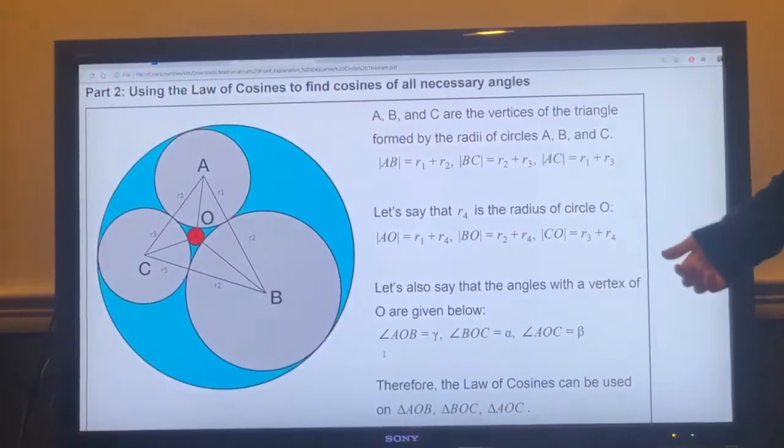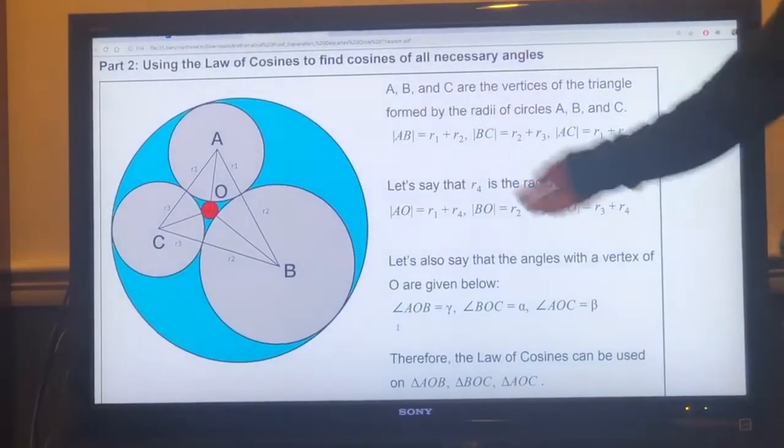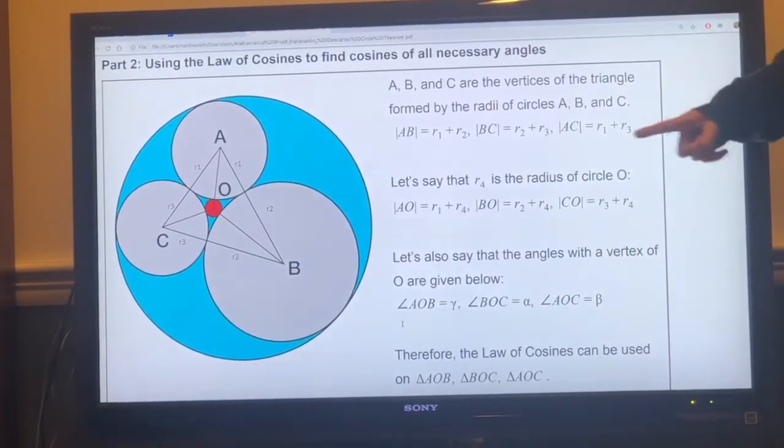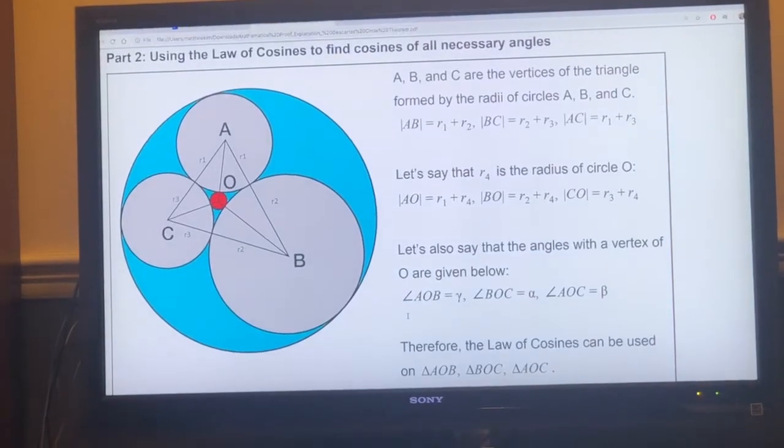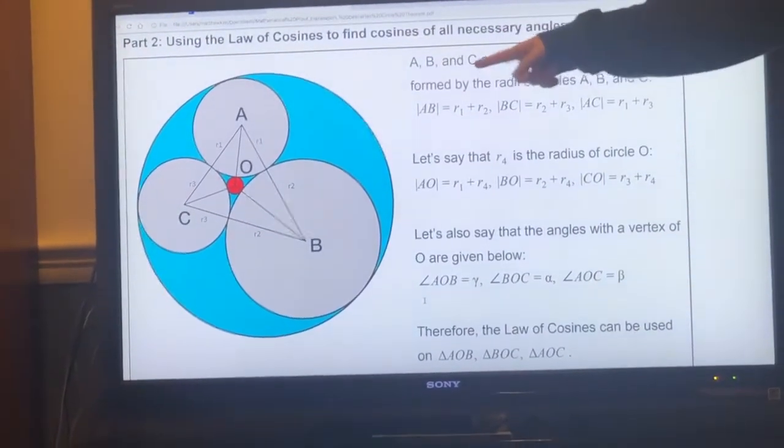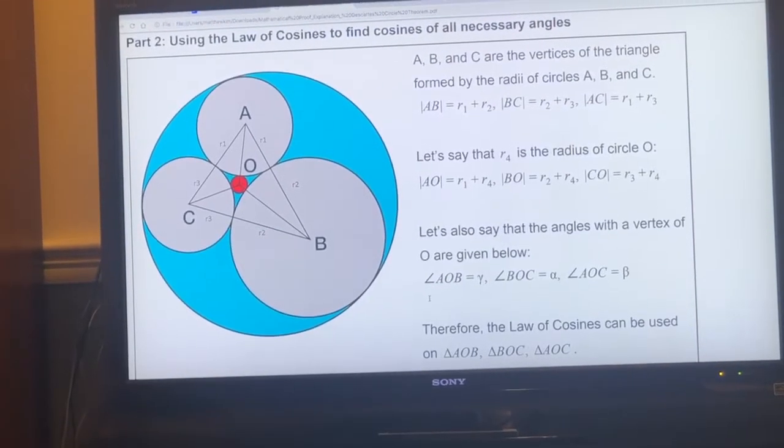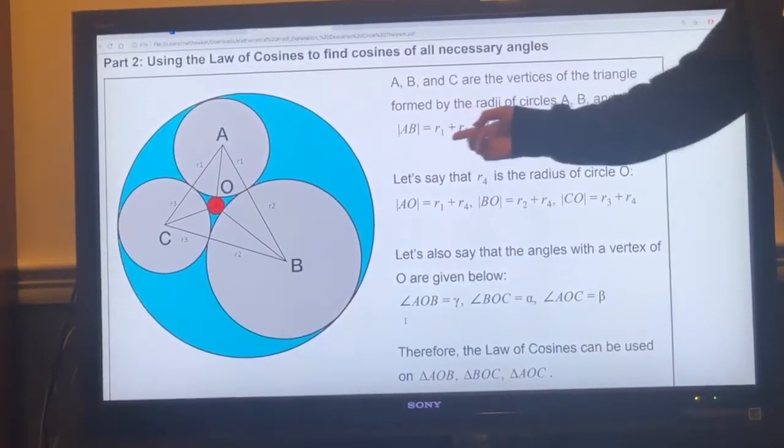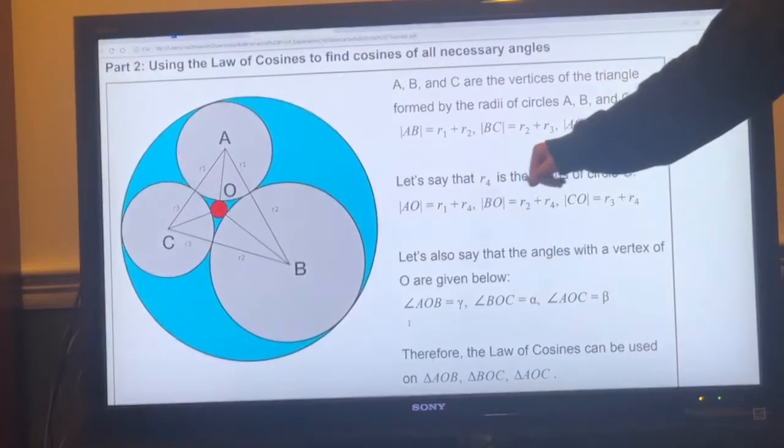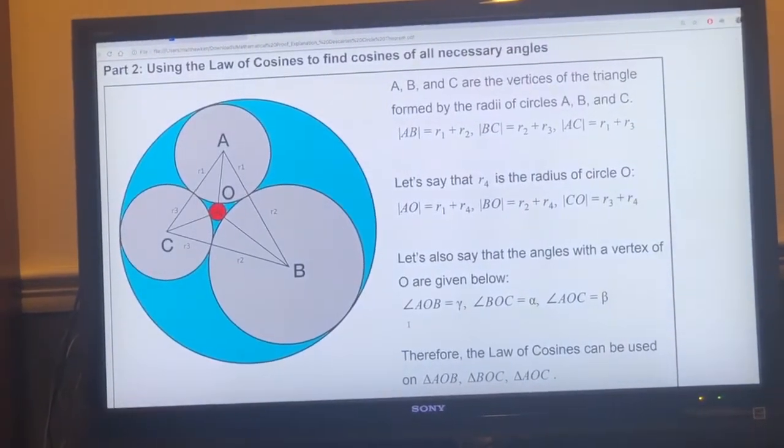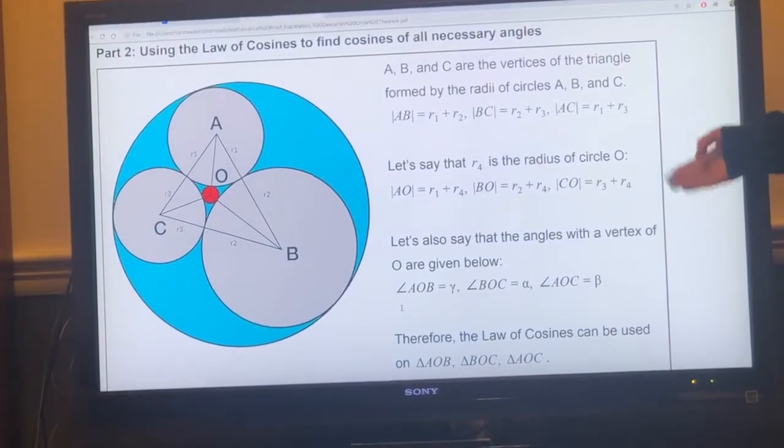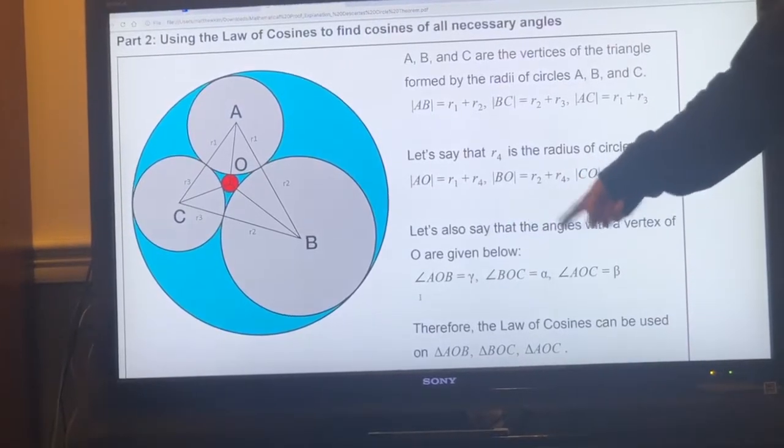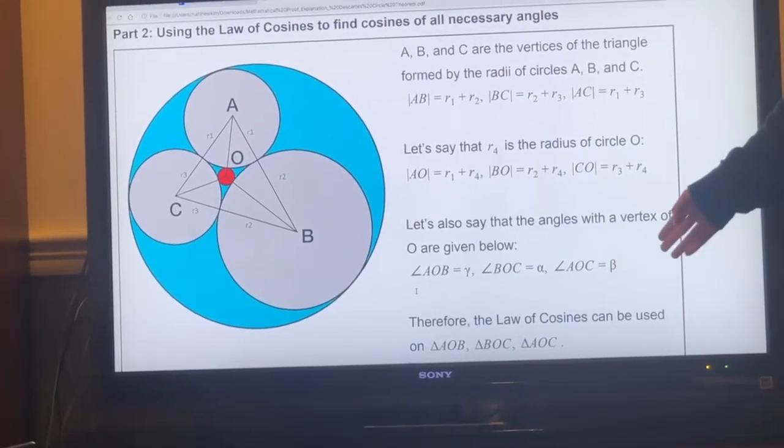Part 2 is using the law of cosines to find cosines of all necessary angles. As you can see, that's the diagram that we previously showed with the three tangent circles, tangent to a bigger circle with a smaller circle in between those three circles. If we let A, B, and C be the vertices of the triangle that's formed when we connect the radii of the circles, this equation is what occurs. These are the sizes, the different radii of the circles. We also let R4, the radius of the small circle O, which is the red circle in the middle. We also let the different angles of the triangle be: angle AOB be γ, angle BOC is α, and angle AOC equals β.